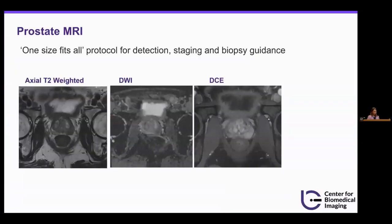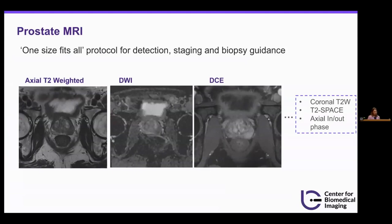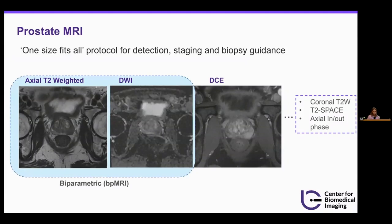Currently for prostate MRI, we have a one-size-fits-all protocol used for detection, staging of lesions, and biopsy guidance. We're acquiring the axial T2-weighted image, diffusion-weighted imaging, dynamic contrast-enhanced imaging, and a large number of other sequences. Many of these sequences are only useful for management if a patient actually has prostate cancer, including the DCE sequence, which requires contrast injection. So what we propose is to train a classifier on just the biparametric portion of the exam to identify which subjects are negative for clinically significant prostate cancer with very high likelihood — so these subjects don't need the extra scans or contrast.